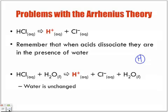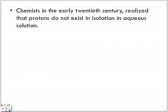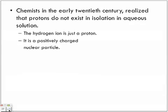So that's really where the question is, and what we're going to also see is protons really don't remain in these type of aqueous solutions as is. So chemists in the early 20th century realized that protons do not exist in isolation in aqueous solutions. So they can't dissociate that way. So where do they go? That's really what we're going to be looking at right now. The hydrogen ion, as we said, just a proton. It is positively charged, nuclear particle. No neutrons, no electrons, just that one proton, that's it.